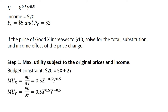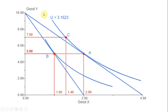Let me first look at this graphically, as that might help guide us in understanding the mathematics a little bit better. The first thing we're going to do is maximize utility subject to the initial price of good X equaling $5 and price of good Y equaling $2. We find that tangency occurs at point A.